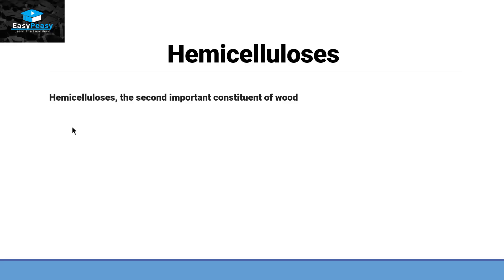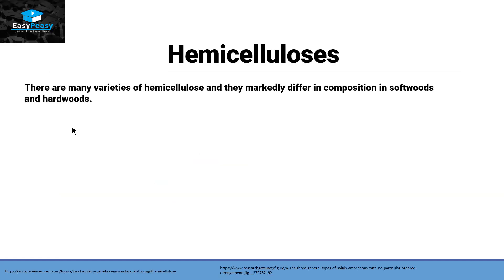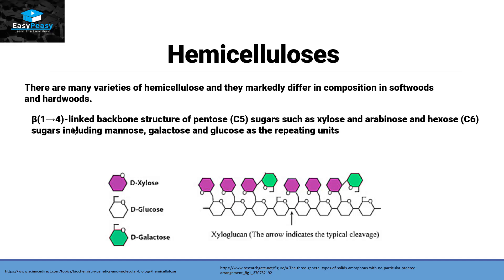Hemicellulose is the second most important constituent of wood and is made up of more than one type of monosaccharide, making it a heterogeneous polysaccharide. Because it has a variety of monosaccharides, hemicellulose can show varied structures in different types of plants, whether softwood or hardwood. Mostly it has a beta 1,4 linked backbone of pentose sugars like xylose or arabinose, and hexose sugars like mannose, galactose and glucose as repeating units.